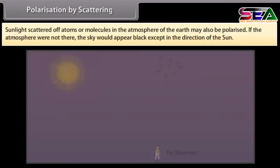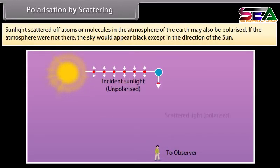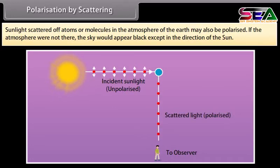Sunlight scattered of atoms or molecules in the atmosphere of the earth may also be polarized. If the atmosphere were not there, the sky would appear black except in the direction of the sun.